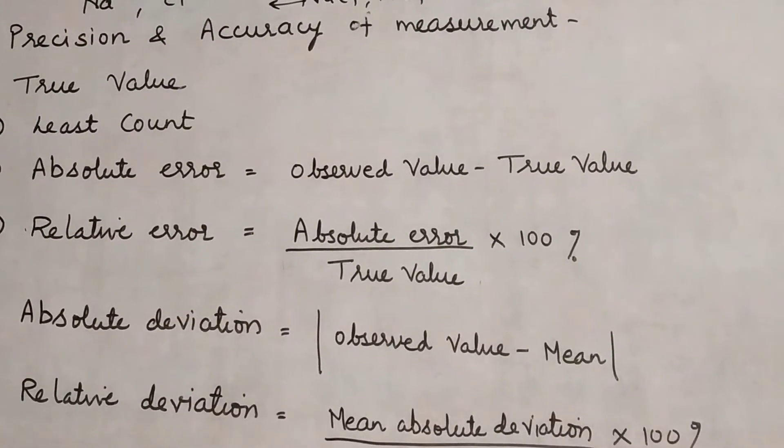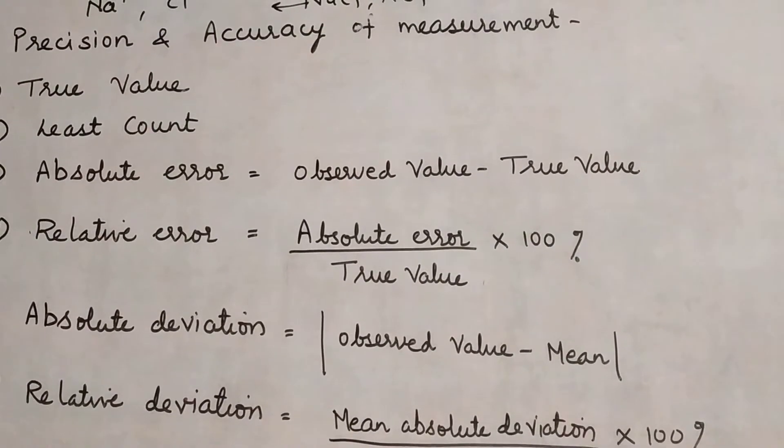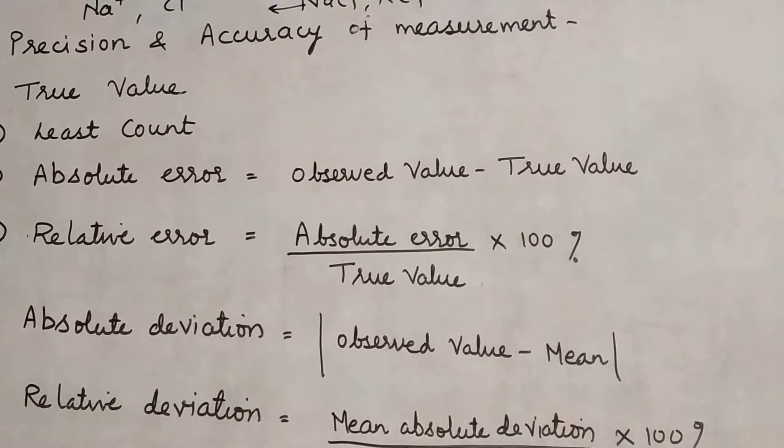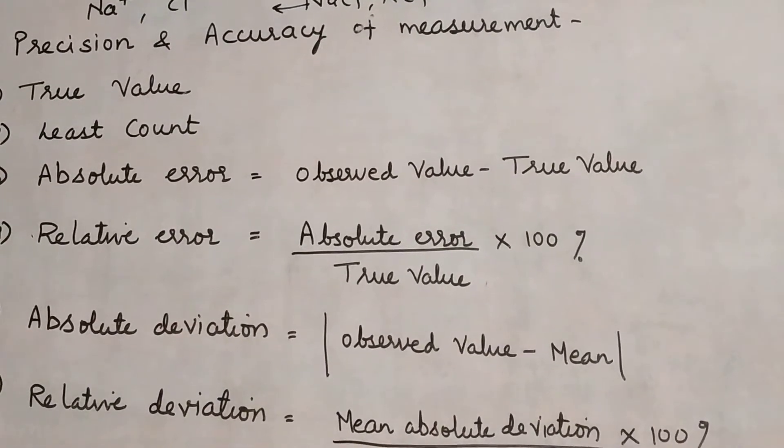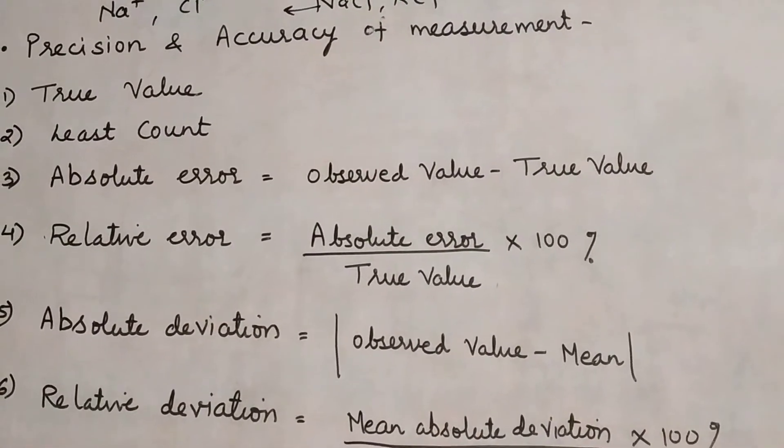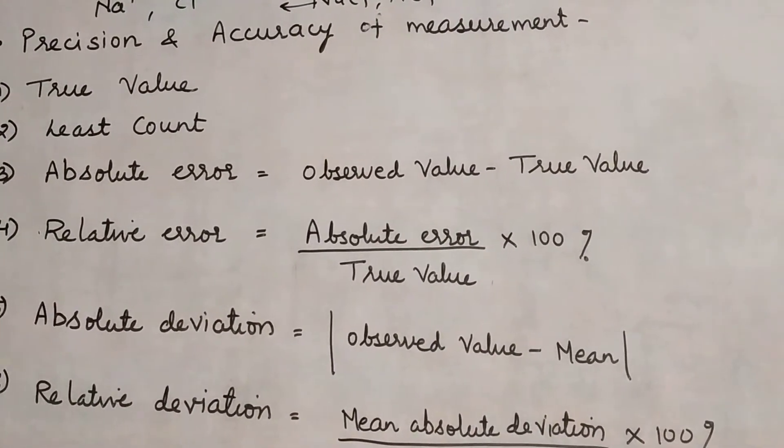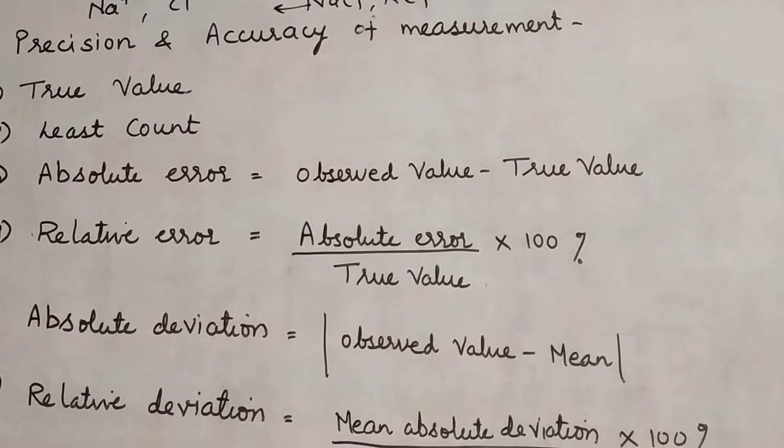To understand this, there are some terms we must see from which we can find out how accurate our measurement is. From those, the terms we must know are true value. What is true value? True value is the actual value that should come. That is called true value. Another is observed value - what we actually observe, that becomes observed value.